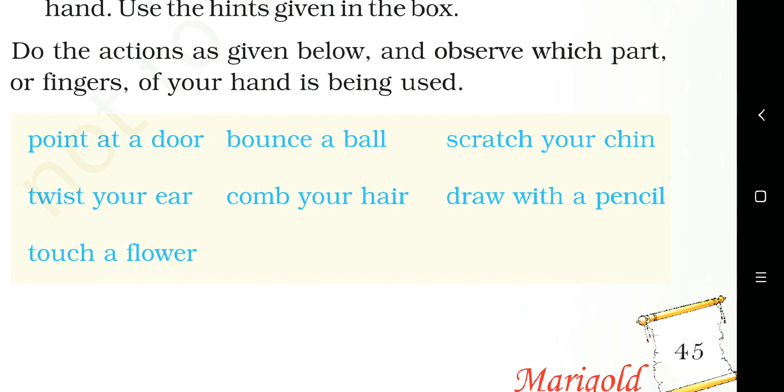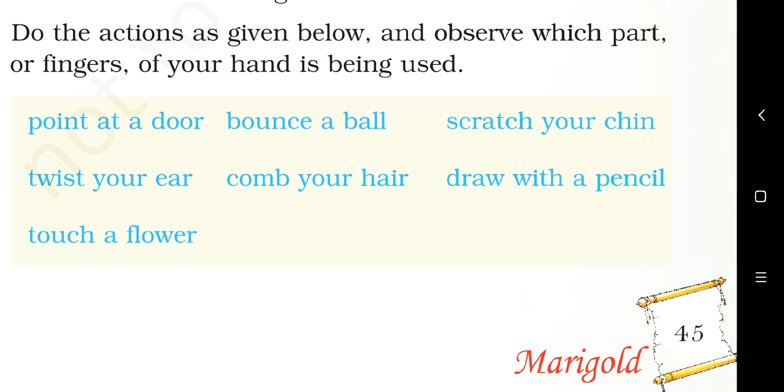I'm observing that I'm using my thumb and my forefinger or index finger. Forefinger is also called as index finger. So for me I can write my index finger and thumb. You do it on your own, observe, and you can write. Next is comb your hair. So comb my hair, I use all the four fingers of my hand as well as the thumb also.